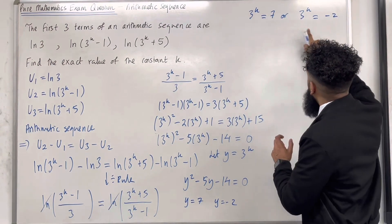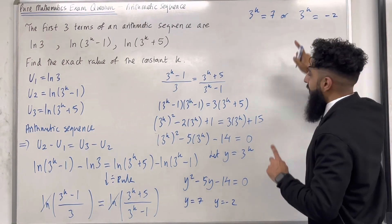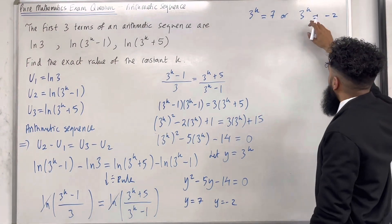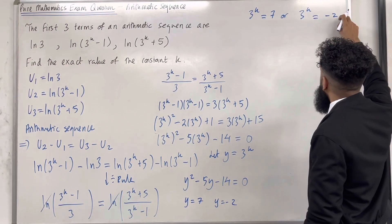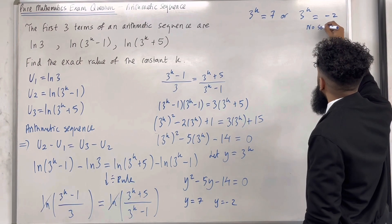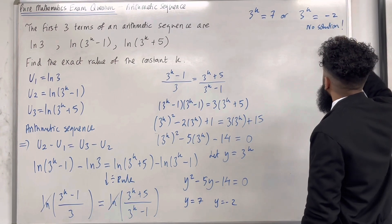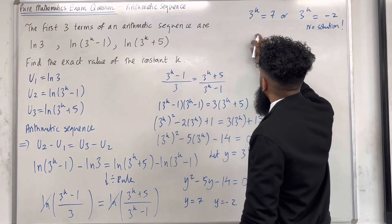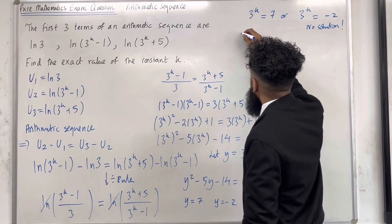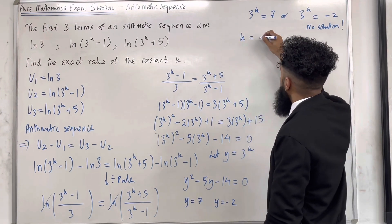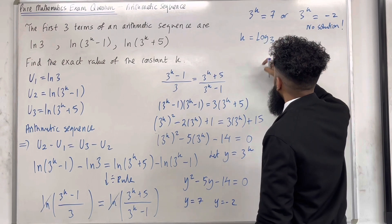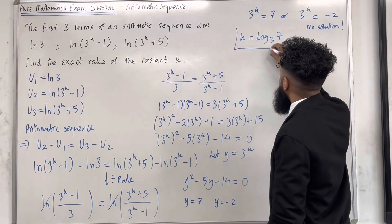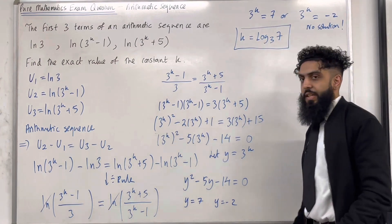Now we know that any power of 3 is always positive, so 3 to the power k cannot equal minus 2 — that equation has no solution. So we solve 3 to the power k equals 7, and rewriting as a logarithm gives the exact value k equals log base 3 of 7.